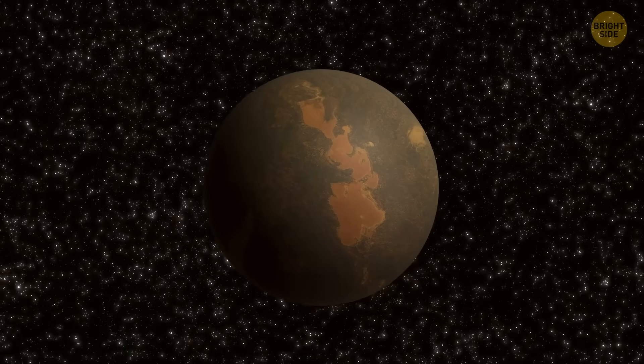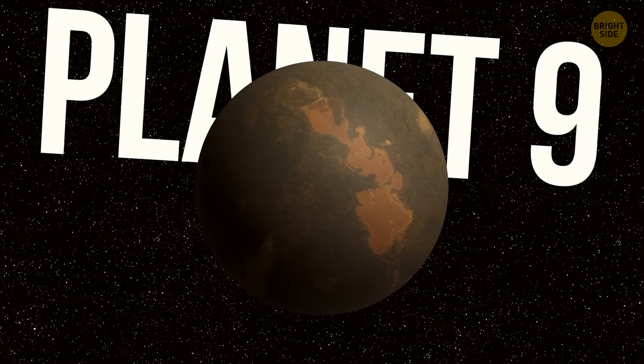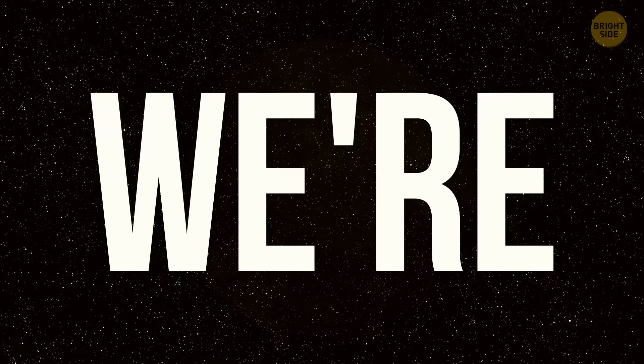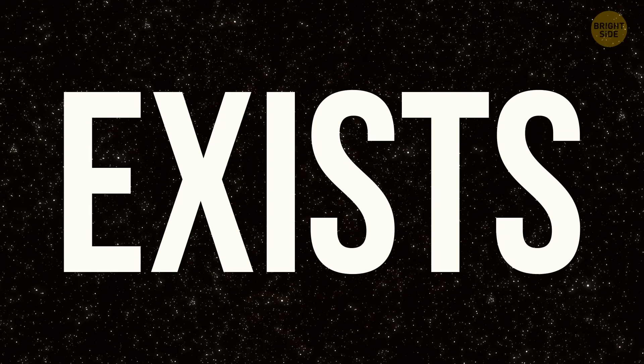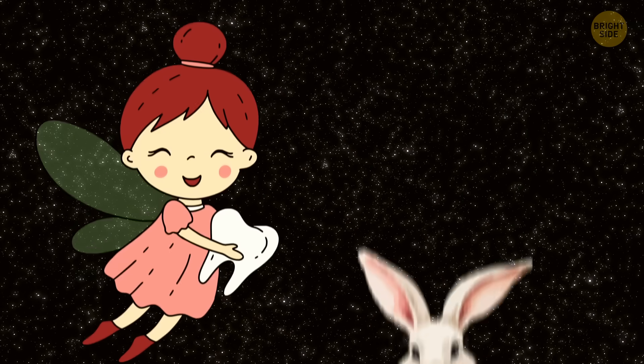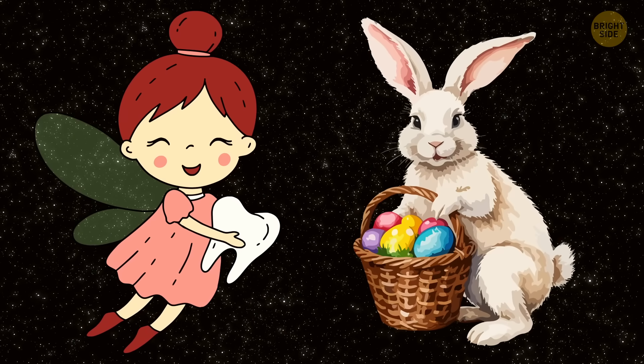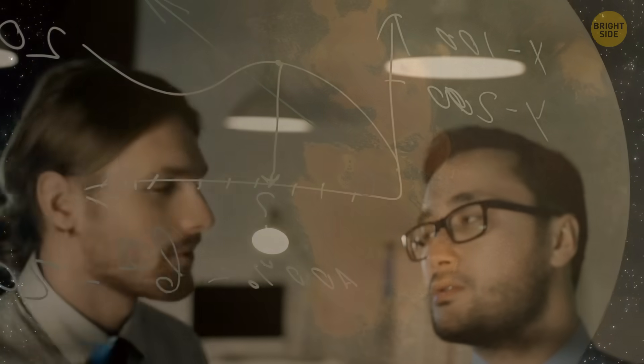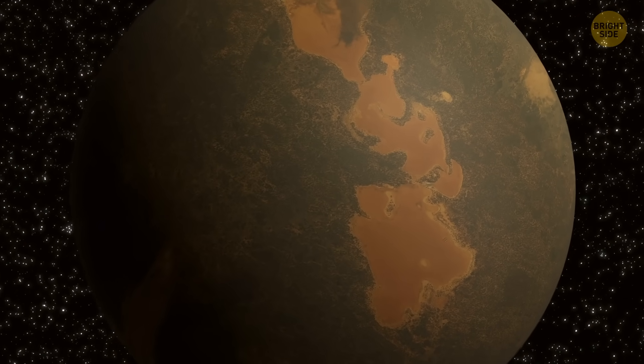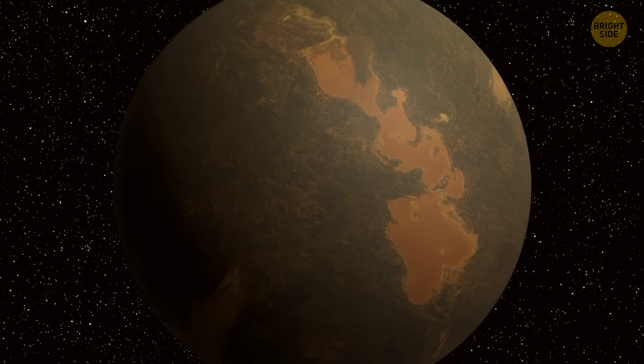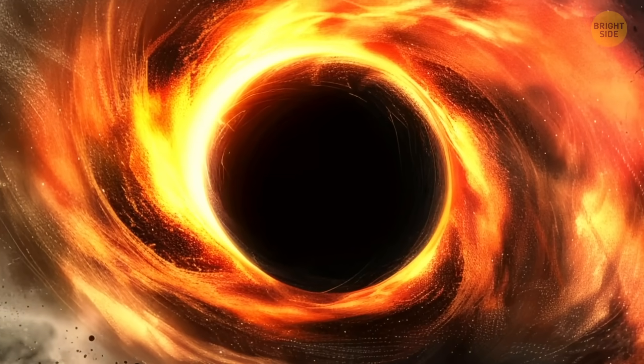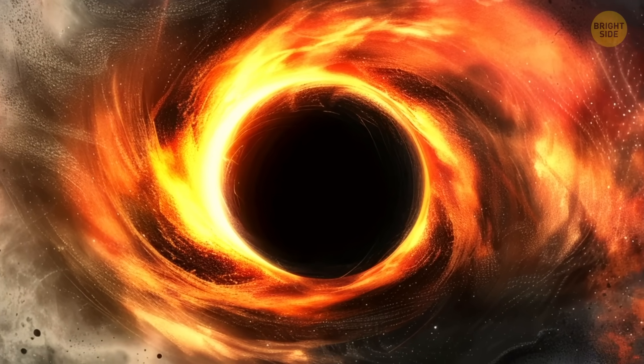Of course, since we haven't actually found Planet 9 yet, we can't say for sure what it's like. We're not even sure that it even exists. Some say it's just a myth, like the Tooth Fairy or the Easter Bunny. But others are convinced that it's out there somewhere. And at the end of the day, we're not entirely sure if Planet 9 is even a planet. It might be a special kind of black hole or made entirely of dark matter.